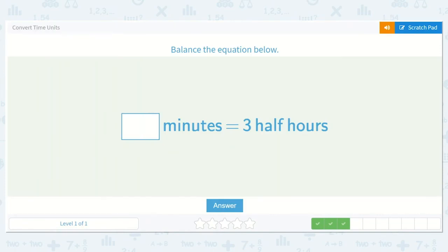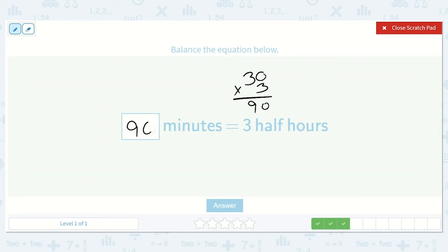Here we have how many minutes is equal to three half hours. So if each half hour is half of 60, so 30 minutes, three times because it's three half hours. Three times zero is zero, three times three is nine. So 90 minutes is three half hours.